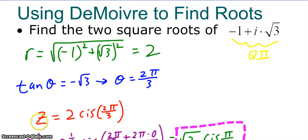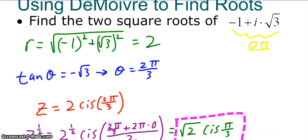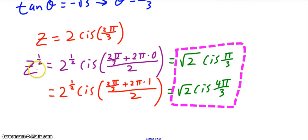So my original theta is 2π/3, so I can write z as two times cis of 2π/3. Now when I do the square root, I have, since it's a square root, I'm going to have two answers.